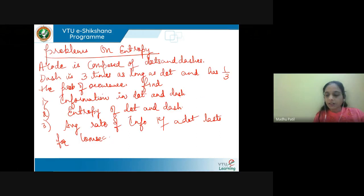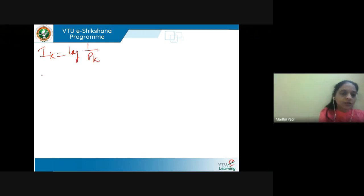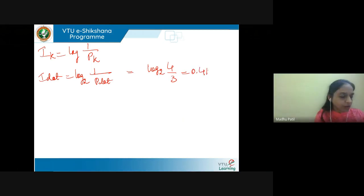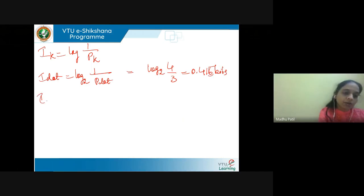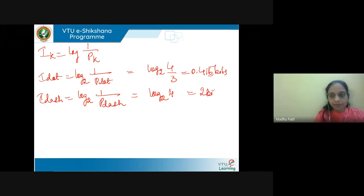The first question is information in dot and information in dash. Information is represented as log(1/p). So information in dot = log base 2 of (1/p_dot) = log base 2 of (4/3) = 0.415 bits. Information in dash = log base 2 of (1/p_dash) = log base 2 of 4 = 2 bits.